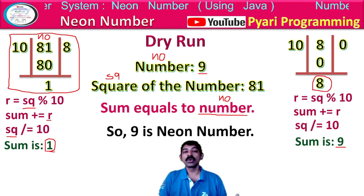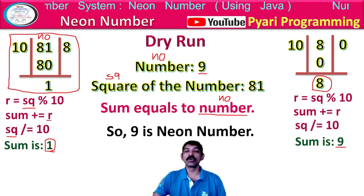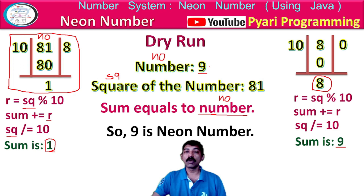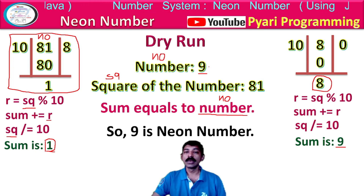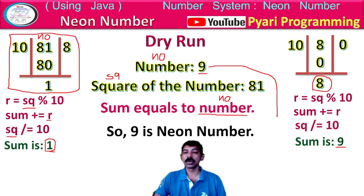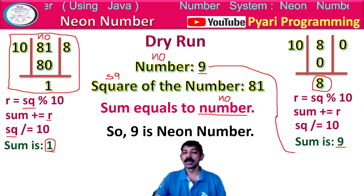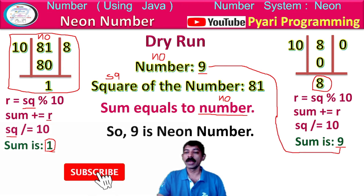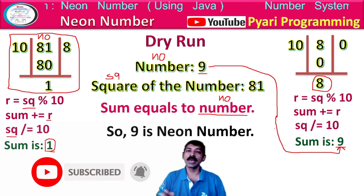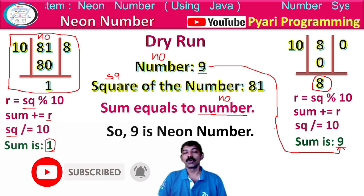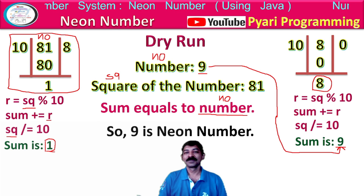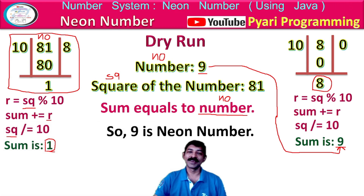So 9 is a neon number. Why? Because the original number is 9 and the sum I got is also 9 — both are equal. That is why it is a neon number. That is all for this dry run.